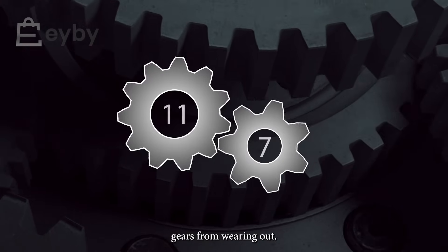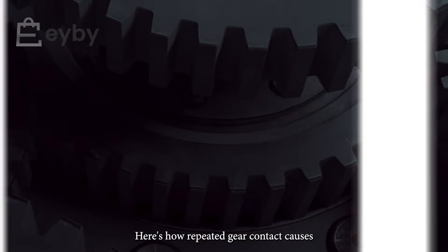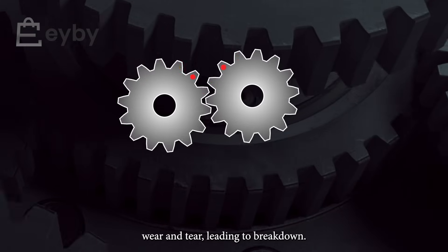Prime numbers can prevent gears from wearing out. Here's how repeated gear contact causes wear and tear, leading to breakdown.